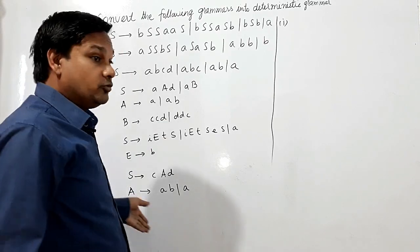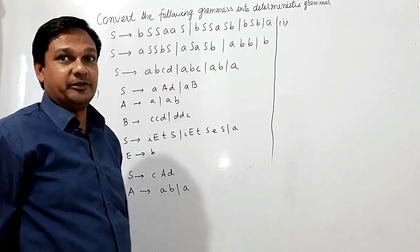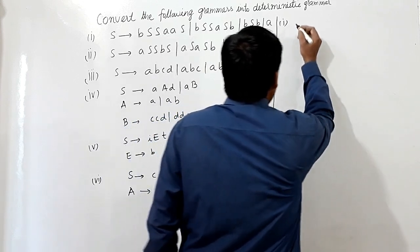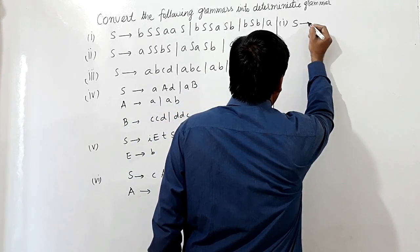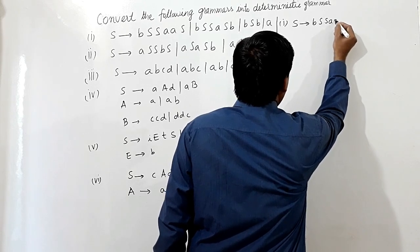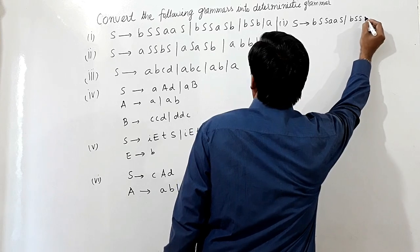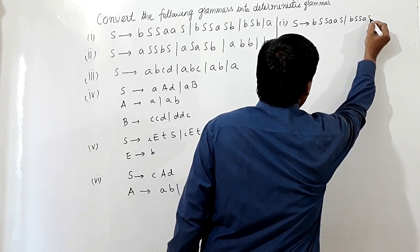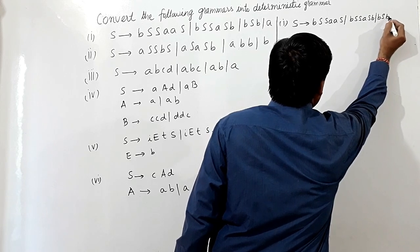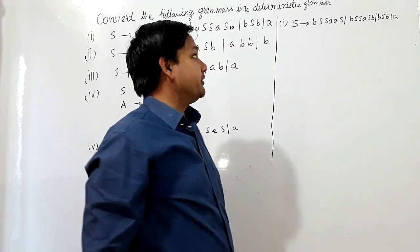Some grammars have been given to us. We have to convert these grammars into deterministic grammar. For the first question, S is producing BS, SAA, SR, BSSASB, RB, SB, and R is producing A. We have to apply left factoring here.